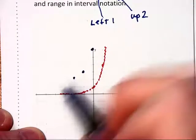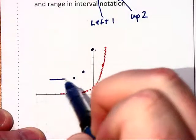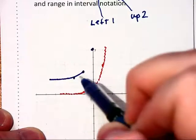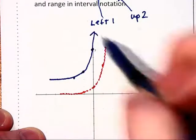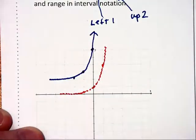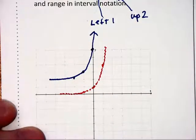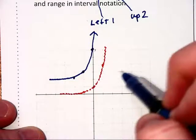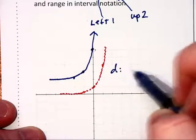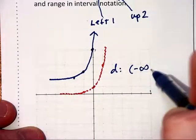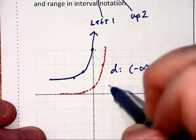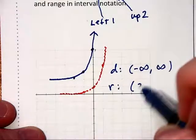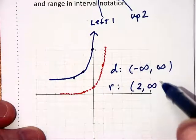So our new graph is going to hug the line y equals 2 as our horizontal asymptote and climb from there. It says write the domain and range. The domain is still going to be all real numbers. But the range is only going to be numbers that are greater than, not including, the 2.